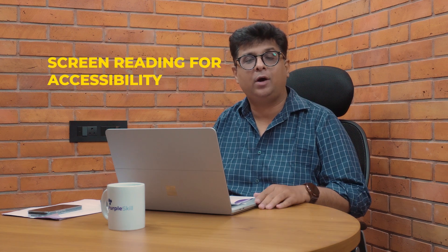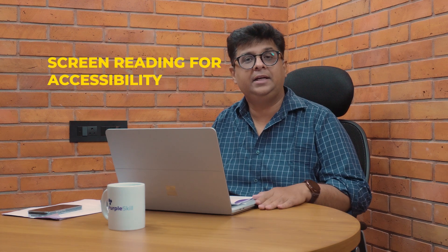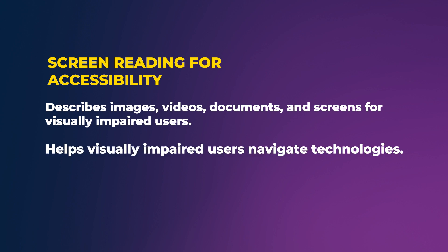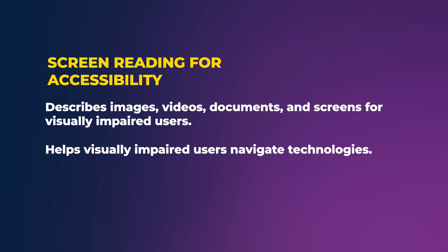Screen Reading for Accessibility: It describes images, screens, videos, and documents to visually impaired users. This feature is used in inclusive tech applications and education tools.